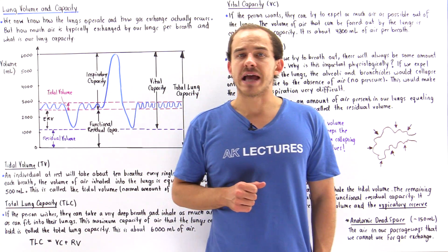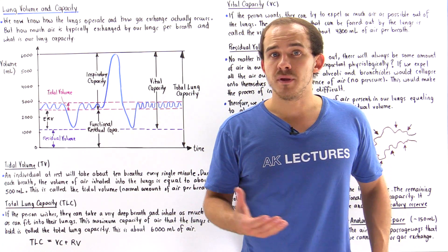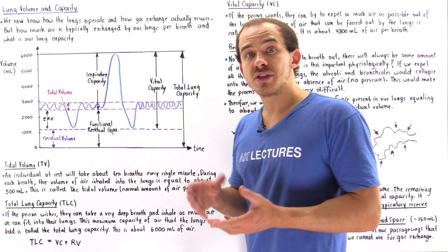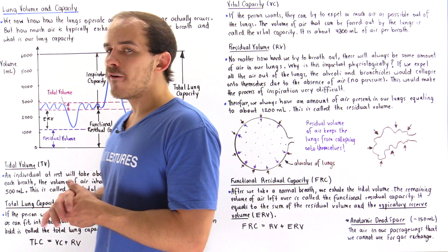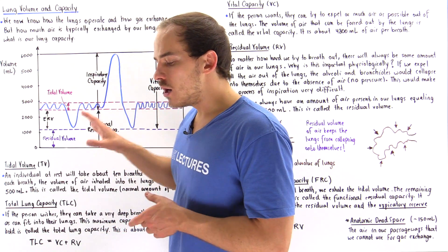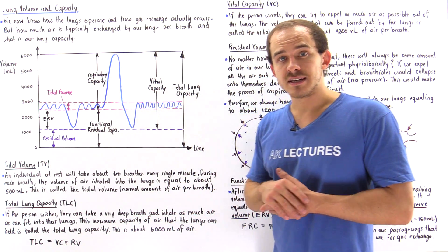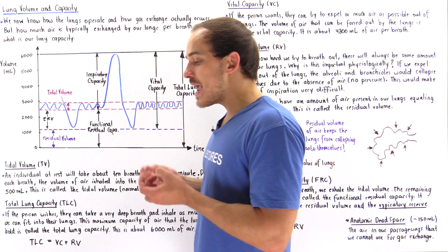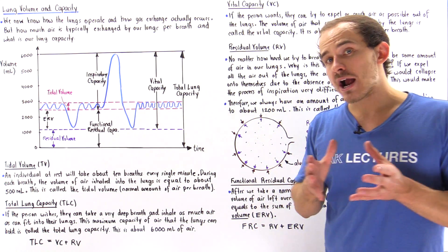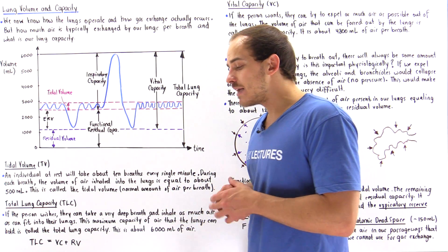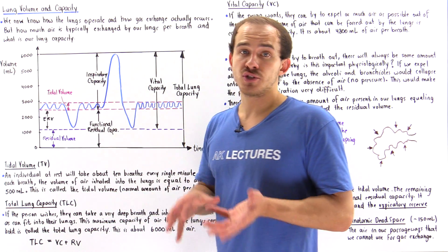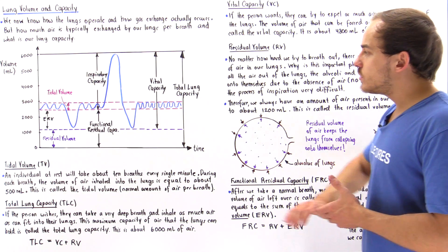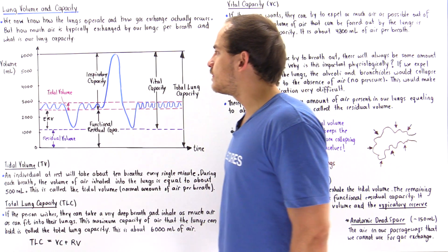We now know how our lungs actually operate and we are familiar with the gas exchange process as it takes place inside the alveoli of our lungs. Now let's focus on something called lung volume and lung capacity. In this lecture we're going to explore questions such as how much air is typically exchanged by our lungs every single time we take a breath, and how much air can actually be stored inside our lungs. Let's begin by taking a look at the following diagram.